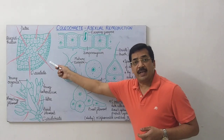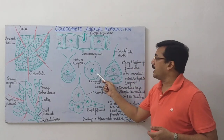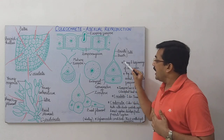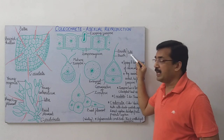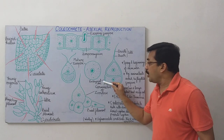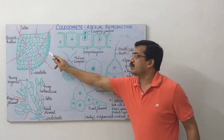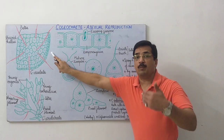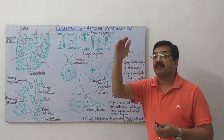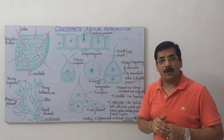Jo discoid thallus wali species hain, jaise Coleochaete scutata, yahaan par pehla division hamesha transverse hota hai, aur do daughter cells ka formation hota hai. Upper cell se seta ka formation hota hai, jabki lower cell se embryonal disc banti hai, aur yeh embryonal disc continuously divide karne ke baad discoid thallus ka formation karti hai. Main aapko pehle hi bata chuka hoon ki discoid thallus mein erect system nahi hota — inme keval prostrate system se hi disc-like thallus ka formation hota hai.